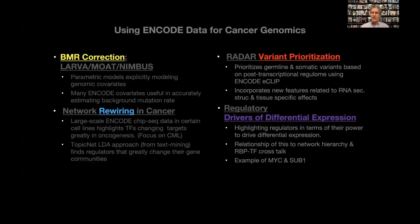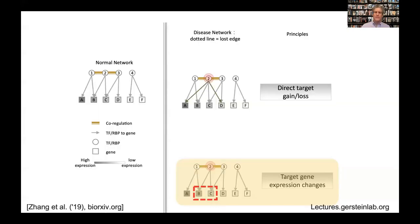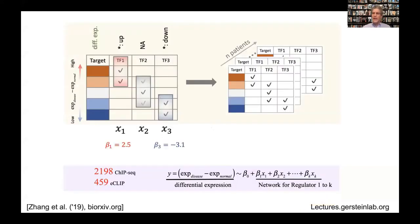The last topic is finding regulatory drivers of differential expression. In oncogenesis the actual regulatory connections between a TF and its targets can change — rewiring. But you could also have a situation where the targets remain the same but the gene expression of those target genes changes a lot. Here we want to find the TFs associated with the target genes that change most in cancer. We use TCGA data showing how genes change in cancer, use the ENCODE regulatory network to associate regulators with targets, and build a simple regression model to explain the change in gene expression from all the regulators.